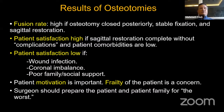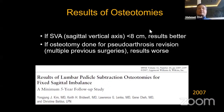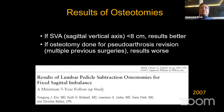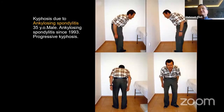Surgeons should prepare the patient and patient family for the worst scenario — tell them the worst scenarios also. If SVA is less than 8 cm, results are better. If it is more, then you need to make more corrections, and in some instances you may need multiple levels of PSO. If osteotomy is done for pseudarthrosis revision, then the results are not as good.